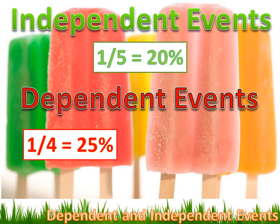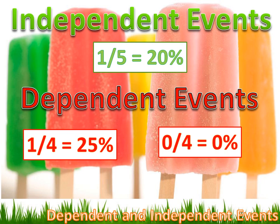But what if I got lucky and drew green on the first draw? Then there'd be no green popsicles left — just the other four flavors. You'd have zero positive outcomes out of four potential outcomes, and your probability of getting a green popsicle would be zero percent.